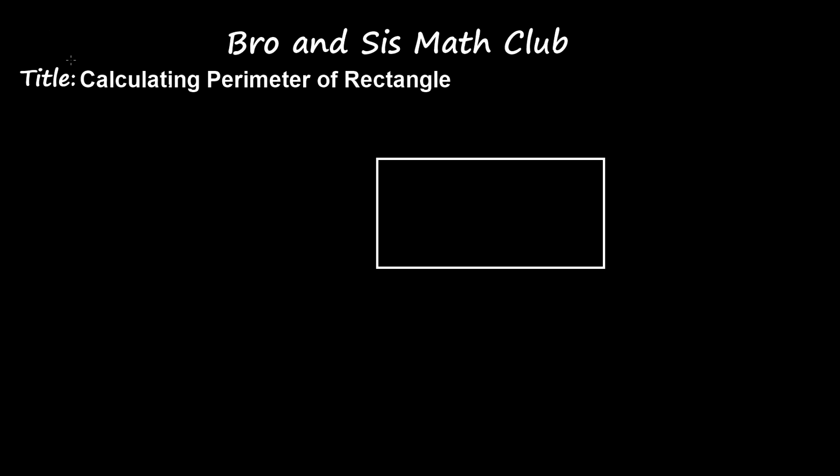So this here is side L and this is also side L, so these two are parallel sides and they have the same measurement. Now these two sides are side W and side W, and these two are also parallel and they have the same measurements.